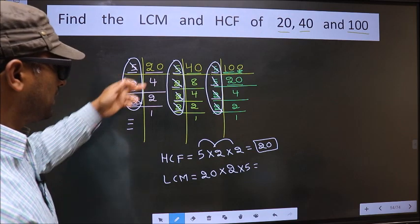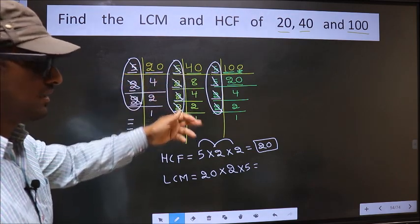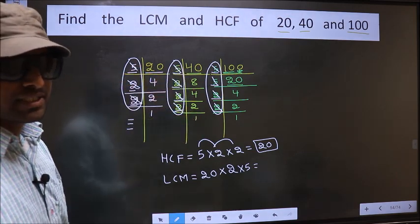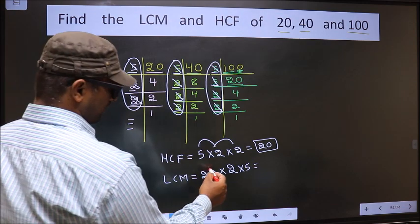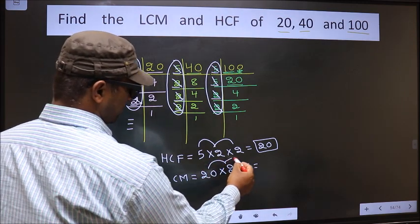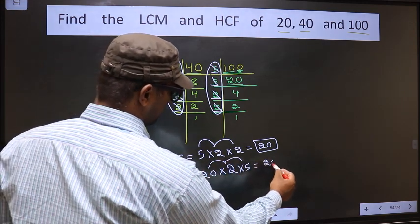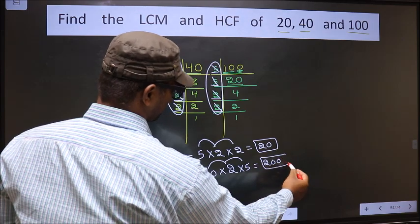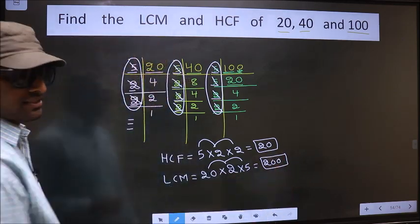Now each number has been cut. Therefore, our LCM is 20 into 2, 40 into 5, 200 is our LCM.